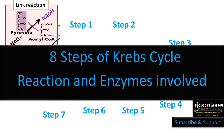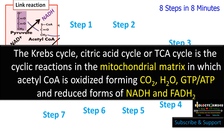Hi friends, welcome to biologyexams4u.com. Today we are going to discuss eight steps of Krebs cycle reaction and enzyme involved within 5 to 10 minutes. Krebs cycle, or citric acid cycle, or TCA cycle, is the second phase of aerobic cellular respiration. It's a cyclic reaction that occurs in the mitochondrial matrix where acetyl coenzyme A is oxidized forming carbon dioxide, water, ATP, NADH and FADH2.